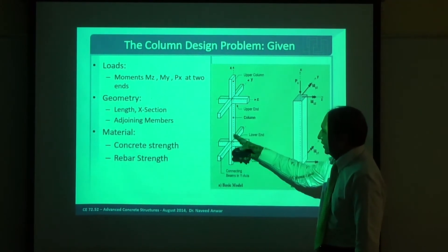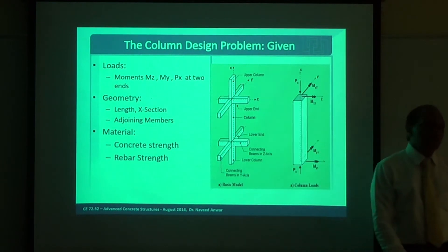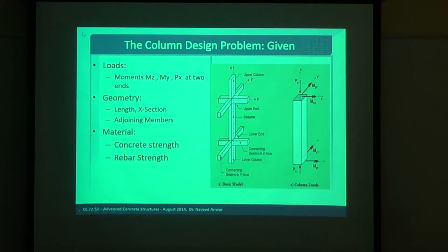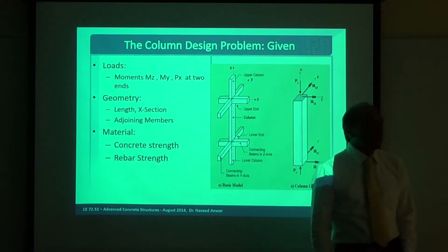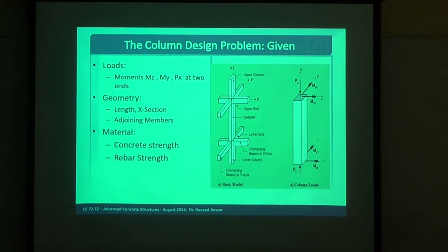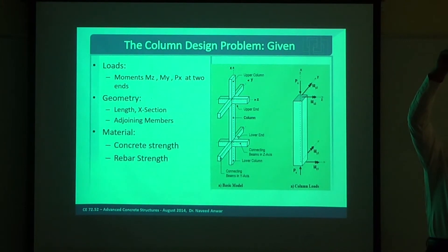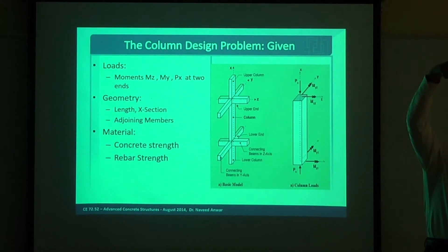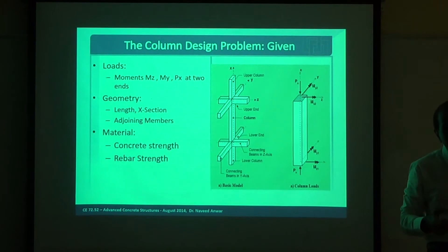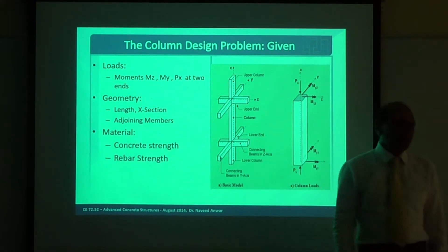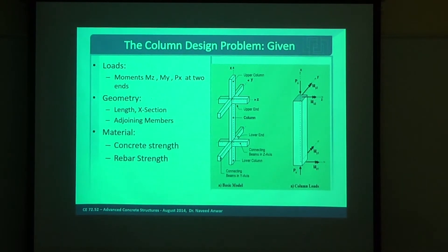Slenderness is not only length — it is also related to loading and framing. Even if the column is very long and there is no axial load, there is no slenderness issue. Or if it is in tension, there is no slenderness issue. The slenderness issue only becomes important when you have a high compression load, so it is a loading-dependent problem. And if the column is very short, even if the load is very high, it doesn't matter.